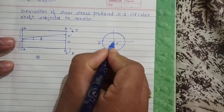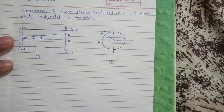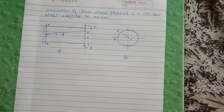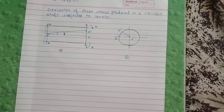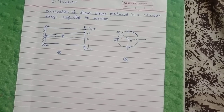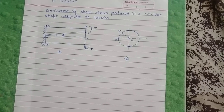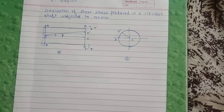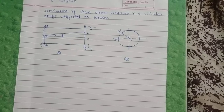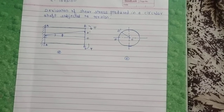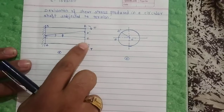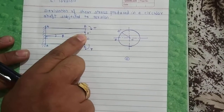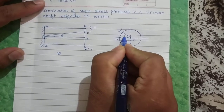Now suppose: R is the radius of the shaft, L is the length of the shaft, T is the torque applied at end B, tau is the shear stress induced in the surface of the shaft due to torque T, C is the modulus of rigidity, phi is the angle D-C-D', and theta is the angle O-D-D'.